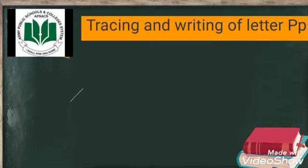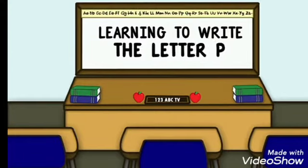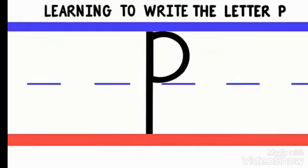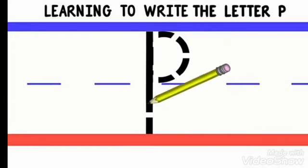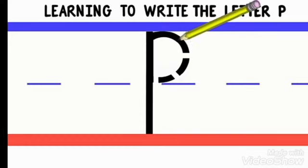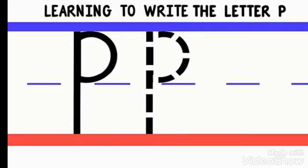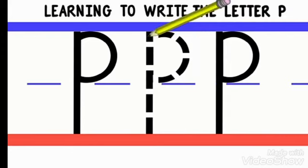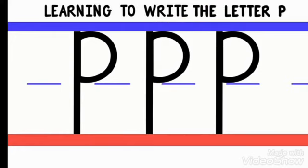Tracing and writing of letter P, sound P. Okay kids, I am telling you how to write letter P and sound P. First we will write letter P. Start from the dot, make a straight line, go up and come round. It's letter P. Again, starting with the dot, make a straight line, go up and come round. It's letter P. Again, start from the dot, make a straight line, go up and come round. It's letter P.